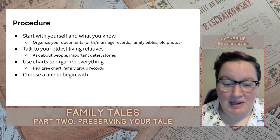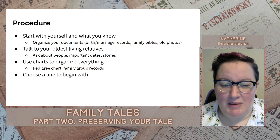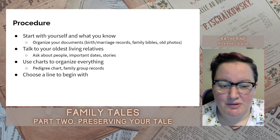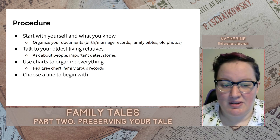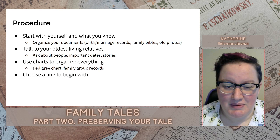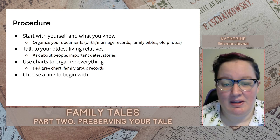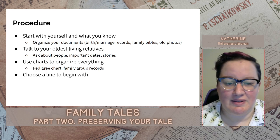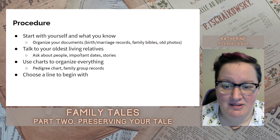You're going to get a lot of information. There are charts called pedigree charts or family group records that you can use to organize everything. We'll go over that in a moment. You will also have to start getting picky at that point, so you'll choose one line in the family to start with to avoid getting overwhelmed and disorganized.